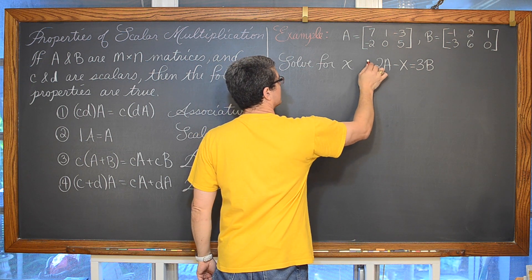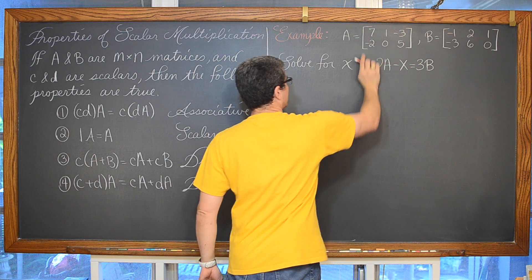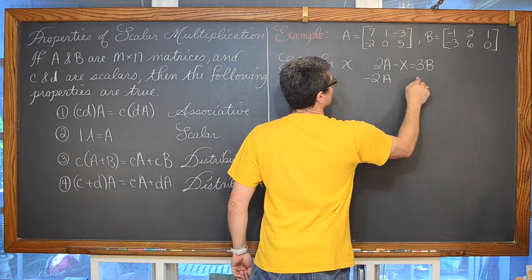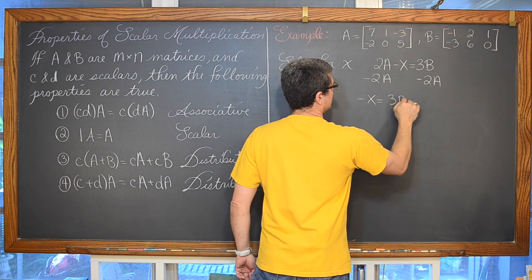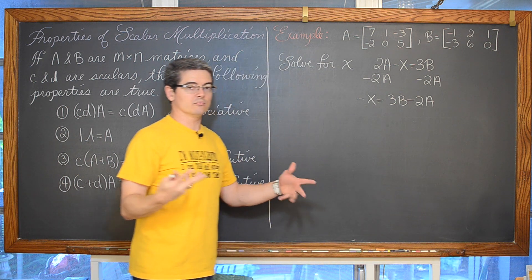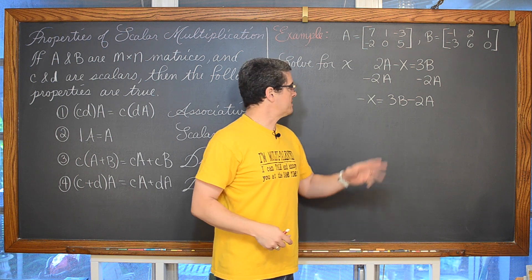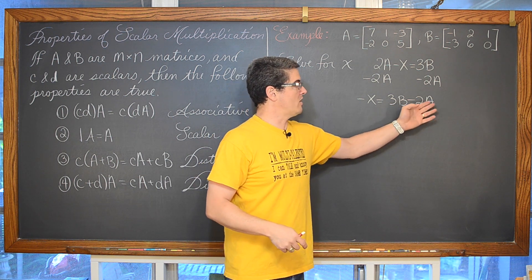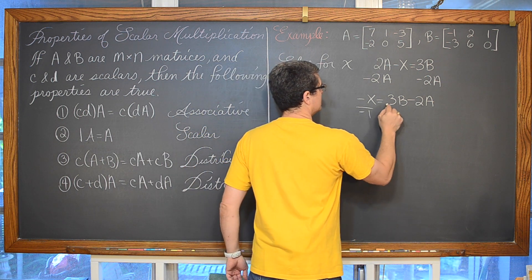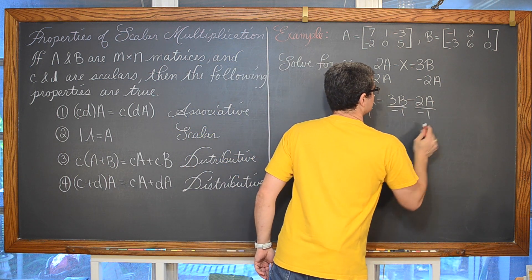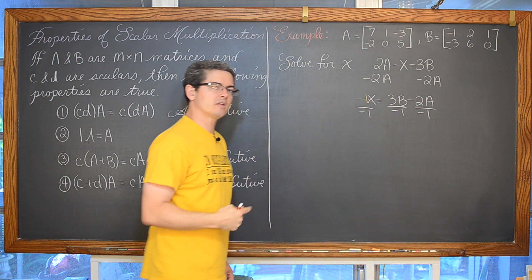Because if you look to the left of this, there is no plus or minus indicated. So we can assume that is a plus 2A. And get negative X is equal to 3B minus 2A. Just handle this like you are dealing with like terms in Algebra 1. We are going to finish isolating this X by dividing that term and all of the terms on both sides of the equation by negative 1.